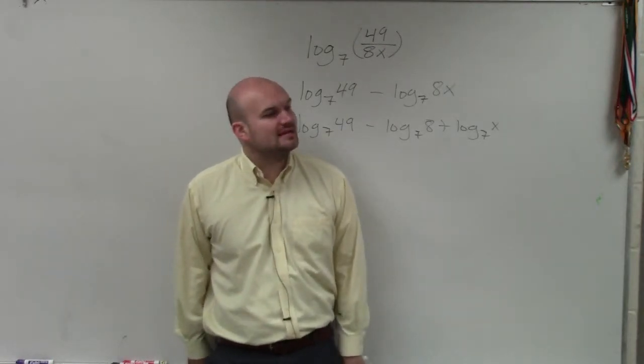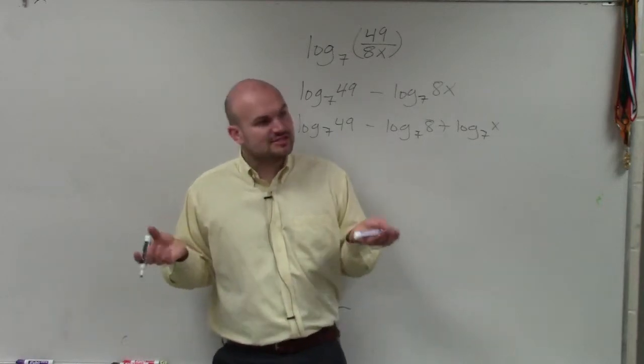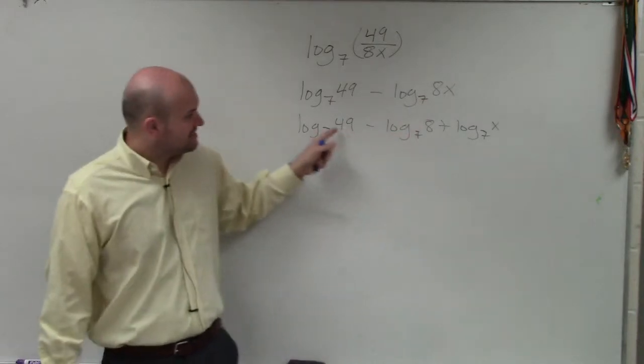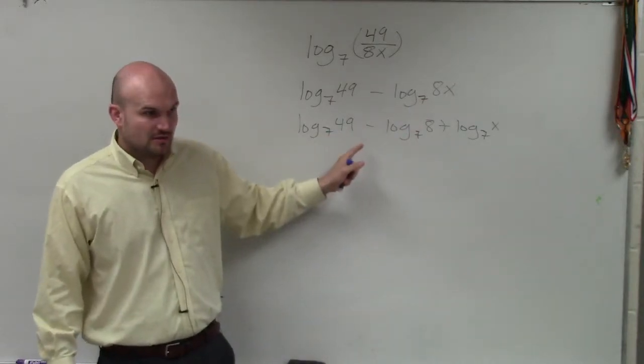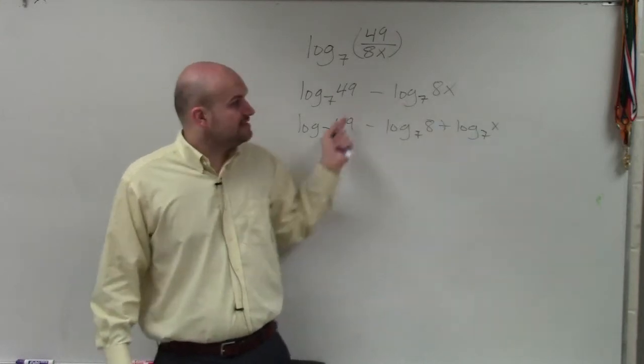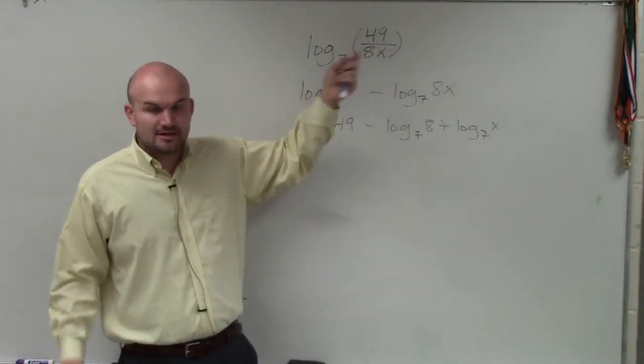Now, here comes the mistake, or here's something I really want you to pay attention to. Notice that if we read this from left to right, that would say divide these two, right, 49 over 8, and then multiply them by x.